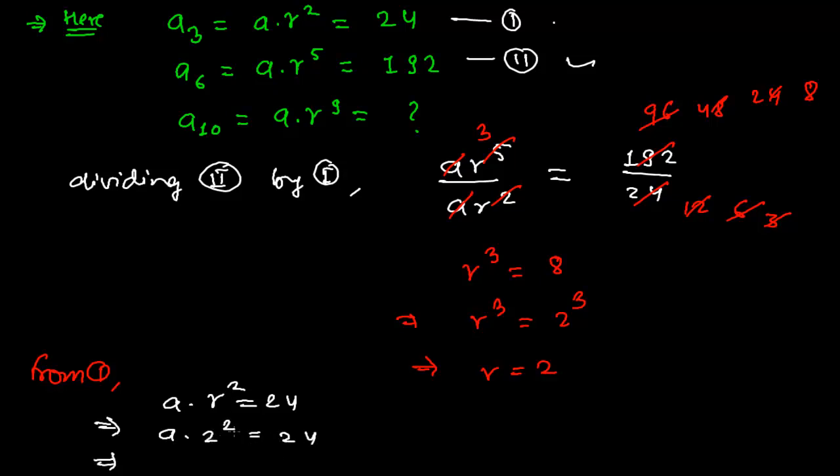That is 2 times 2, that is 4a. A times 4 equals 24, so here I can say that a equals 24 divided by 4, that's 6. So we got the value of a as 6 and r as 2.